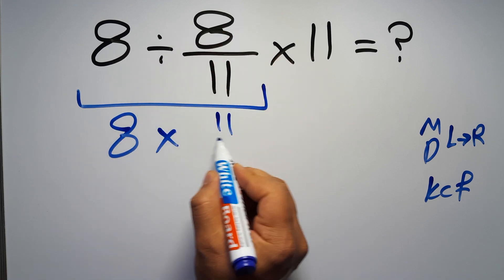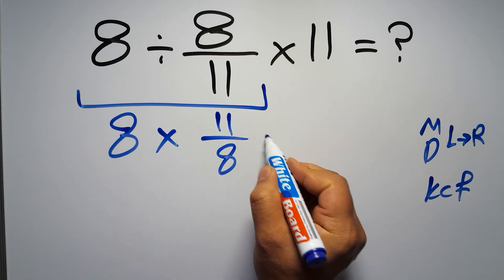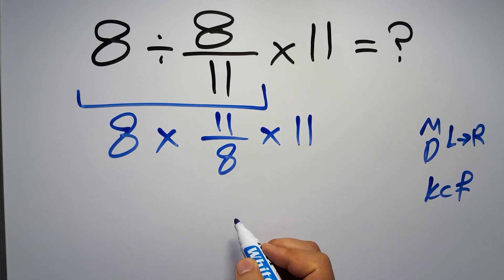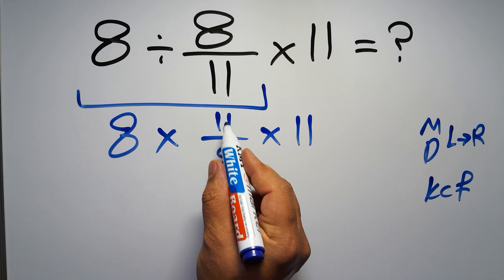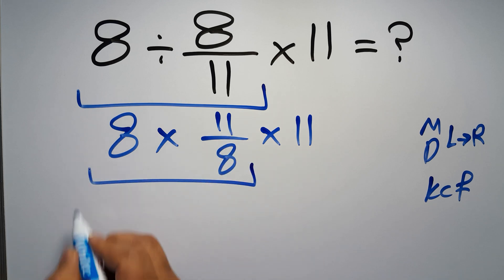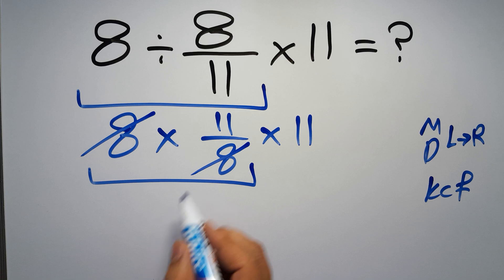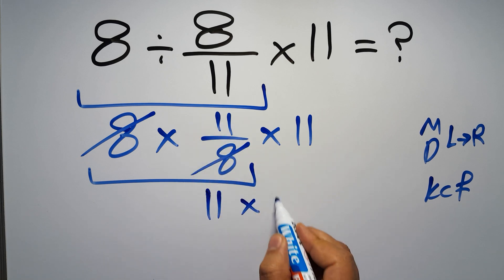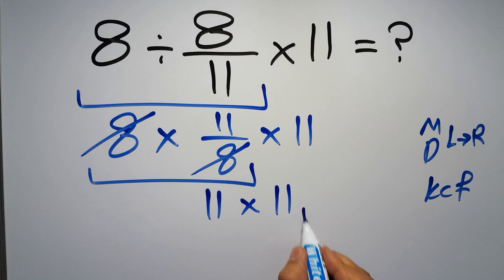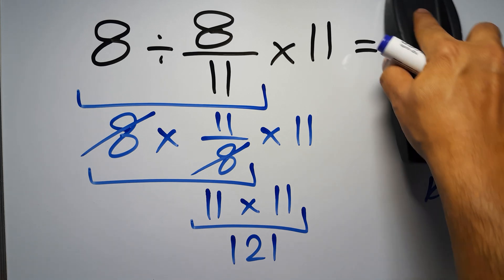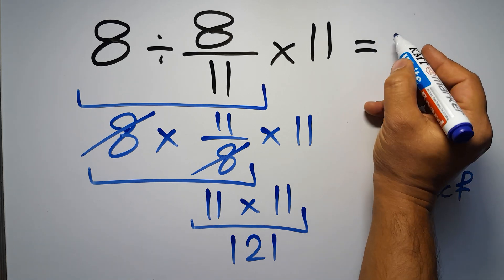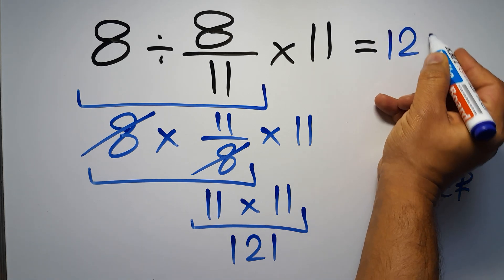Then times 11. Now, 8 times 11 over 8. We can easily cancel this 8 and this 8, so here we have just 11. So 11 times 11, which equals 121. And this is our final answer to this problem. The correct answer is 121.